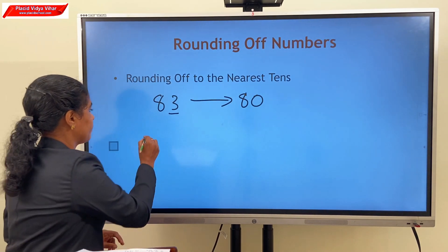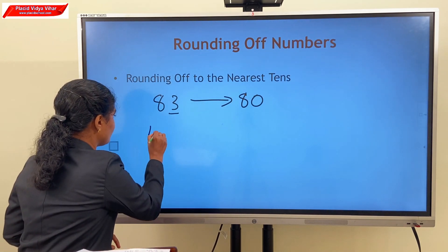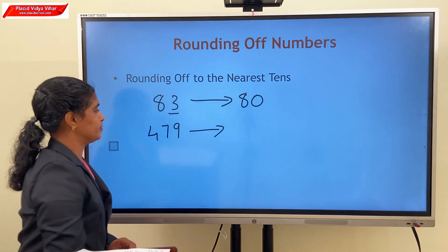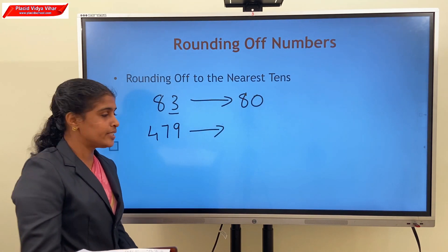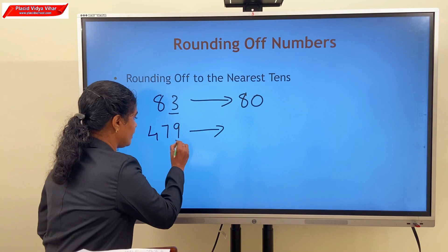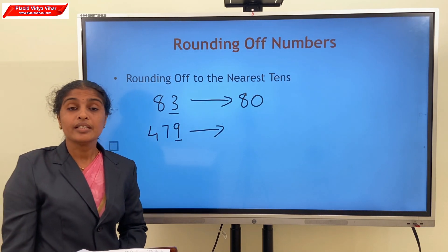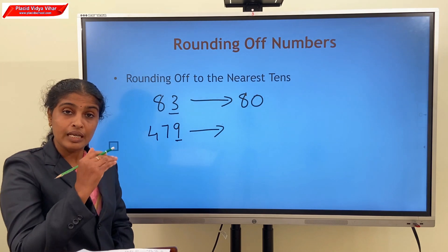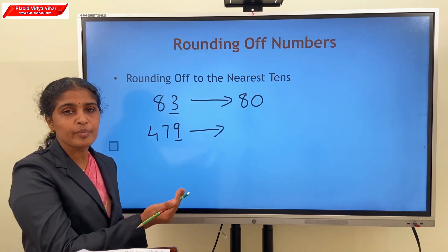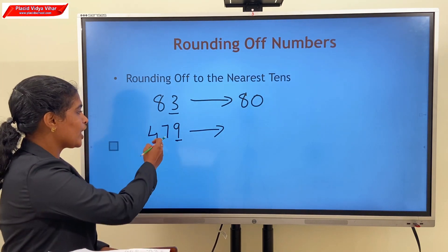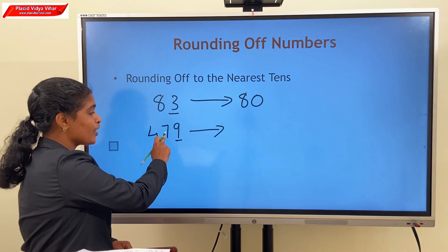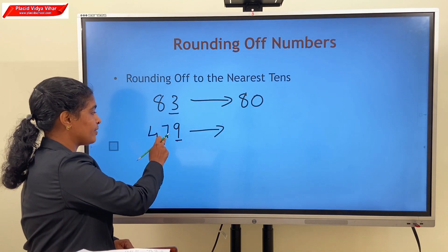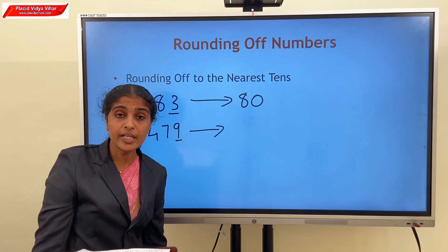Consider the number 479. Here the ones digit is 9, which is greater than 5. So we round off to the next higher multiple of 10. We add 1 to the tens place, so 479 becomes 480.